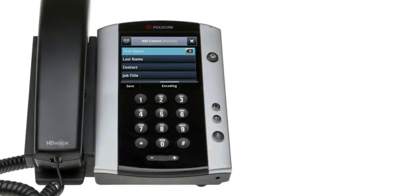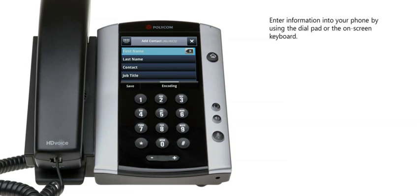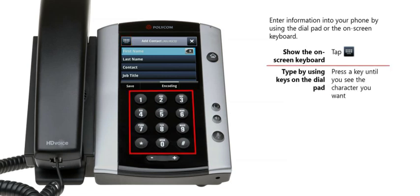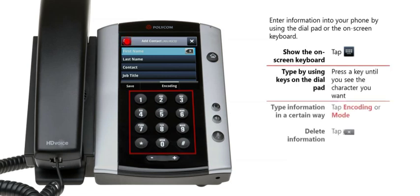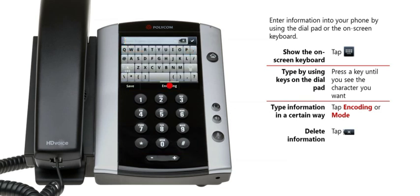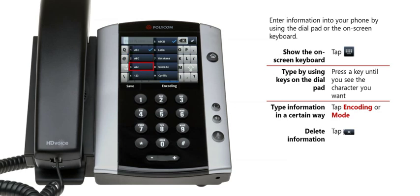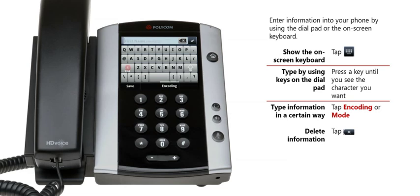To increase your efficiency at voice communications, you can enter information such as details about contacts into your phone. You can enter information either by using the on-screen keyboard or by using the dial pad keys on the phone's console. Either way, you can choose among several data entry modes including numbers only, uppercase text, lowercase text, and title case text. Additionally, you can enter a variety of special characters such as the ampersand.